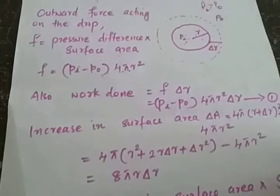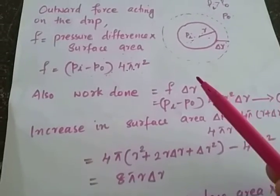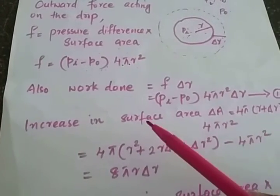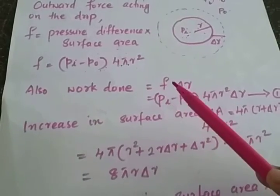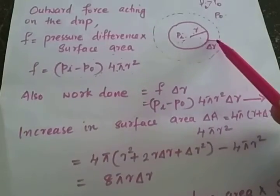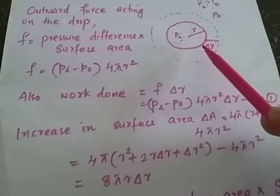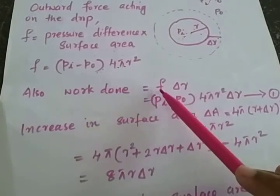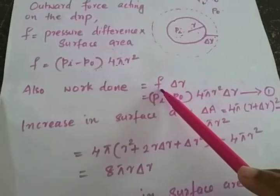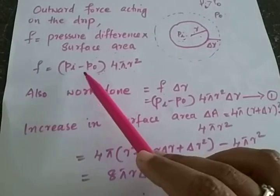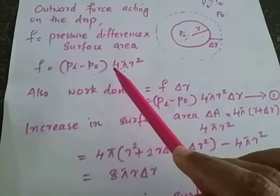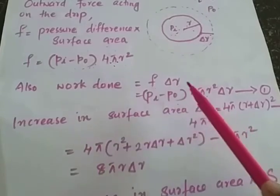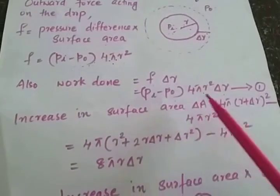Now what is the work done here? The liquid drop has been expanded, so some work is done by this force. Work done is force into displacement, and here the liquid drop has expanded through a small displacement delta R. So work done equals force into displacement, which gives Pi minus Po into 4πR² into delta R. This is the work done.